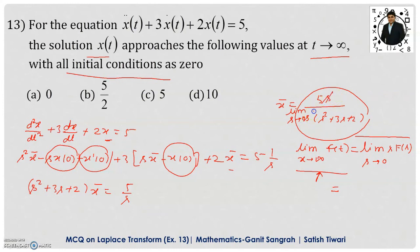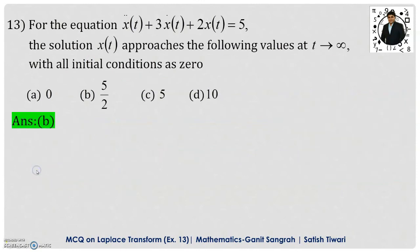Therefore, s will get cancelled and if I put s equals 0, this is 0, this is 0, we are left with only 5/2. So tell me which option is correct? Yes, option B is correct.